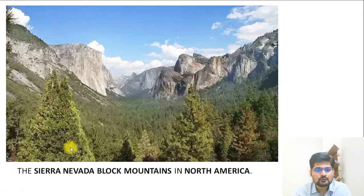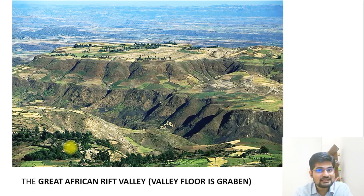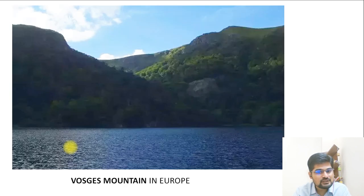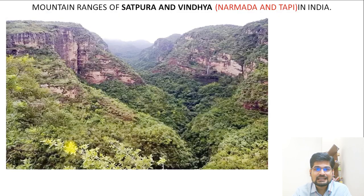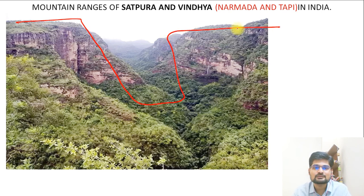World examples of horst and graben formations include: Sierra Nevada block mountains in North America, the Great African Rift Valley where the valley floor is the graben, the Rhine Valley in Europe as a rift valley, and the Vosges Mountains in Europe as part of a horst and graben structure. In India, the Satpura and Vindhya mountain ranges represent horsts, with the Narmada and Tapi rivers flowing through the rift valleys between them.